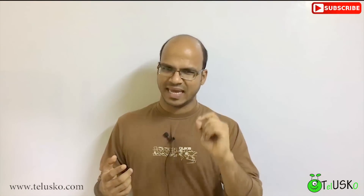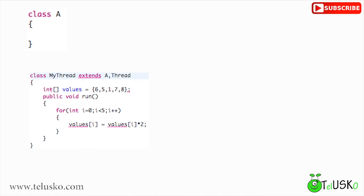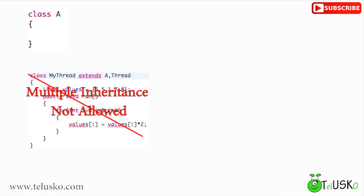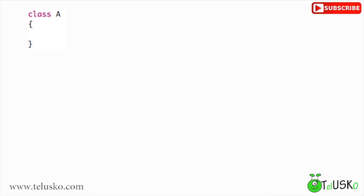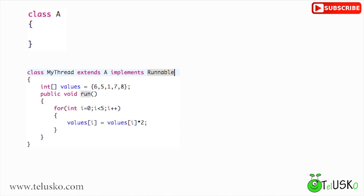There is one problem with extending Thread: if your class already extends another class A, Java does not support multiple inheritance, so you cannot say 'extends A, Thread'. That's why we have a second way to create a thread using the Runnable interface. Instead of extends Thread, you write: class MyThread implements Runnable. The Runnable interface has a run() method, and using it you can achieve the same threading behavior. So you have two ways: extending the Thread class, or implementing the Runnable interface.